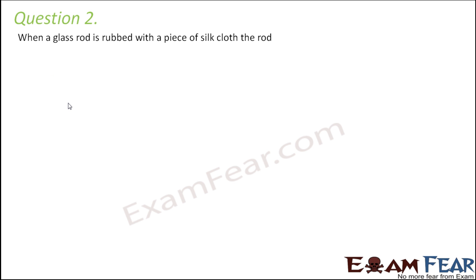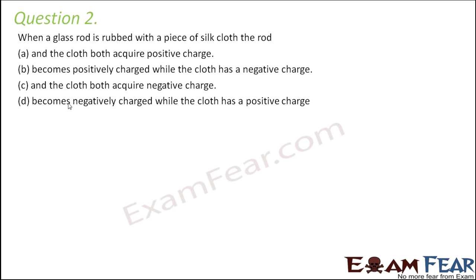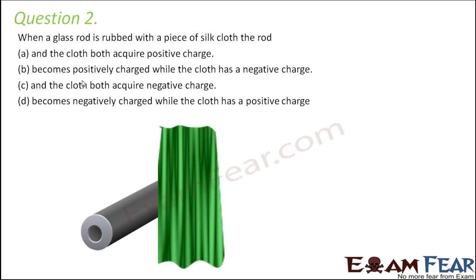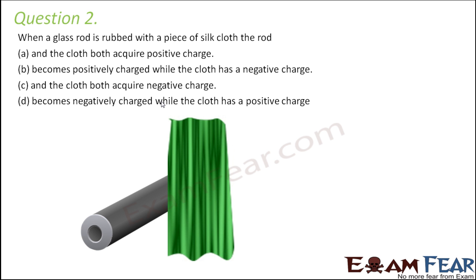Question number 2: When a glass rod is rubbed with a piece of silk cloth, what happens? Transfer of charge takes place. The glass rod acquires a positive charge and the silk cloth acquires a negative charge. This is the right answer because electrons tend to flow from the glass rod to the silk cloth.